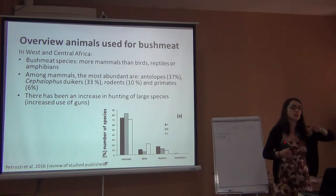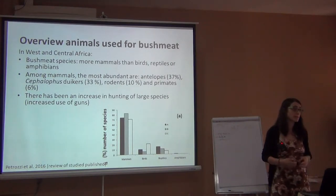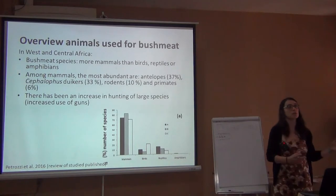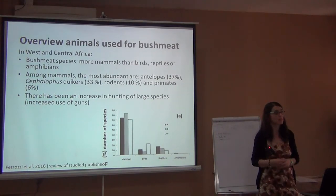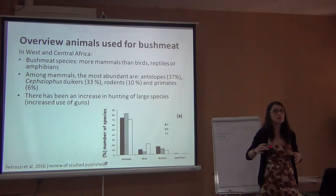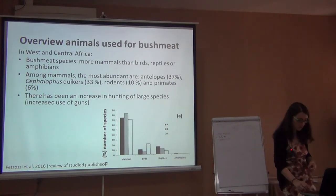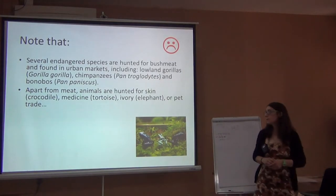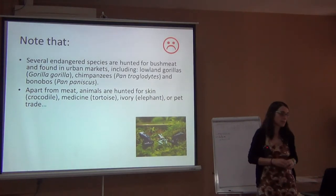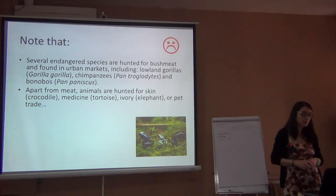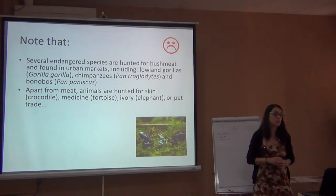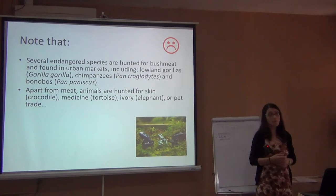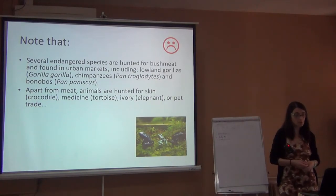It's important to remember that some flagship species — very famous animals — are still hunted for bushmeat, including gorillas, chimpanzees, and bonobos. Also, some animals are not just hunted for the meat but also for the skin — like crocodile — for medicine, especially tortoises, for ivory, which is a big issue, or for the pet trade.